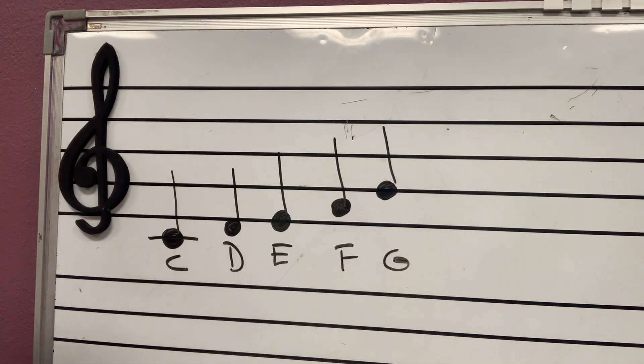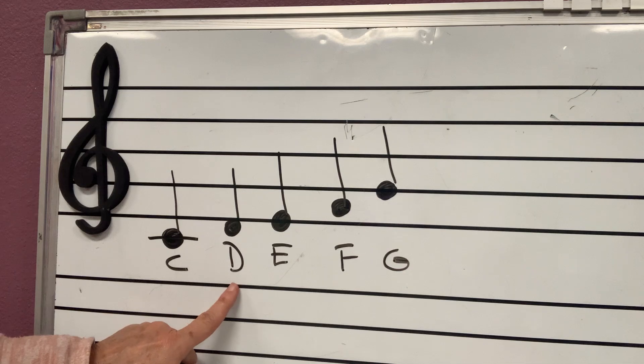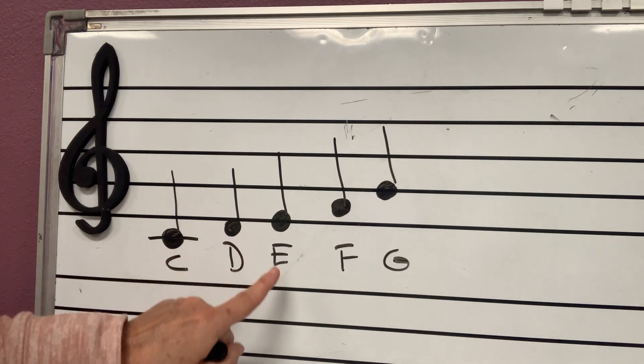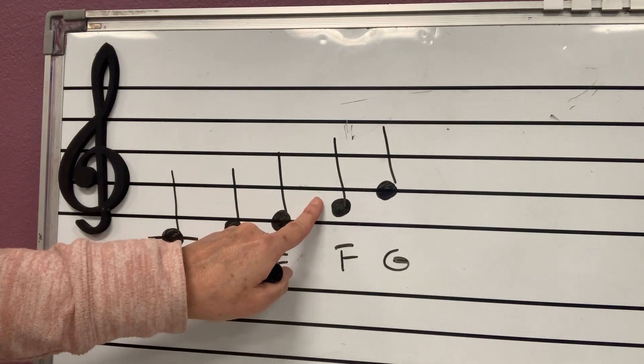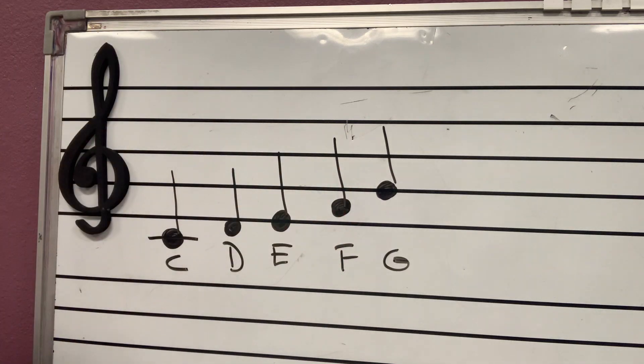Now we will review the notes that we know to read. Outside of the lines are with a hat C, sticking to the line D, stepping on the first line E, on the first space is F, and on the second line is G.